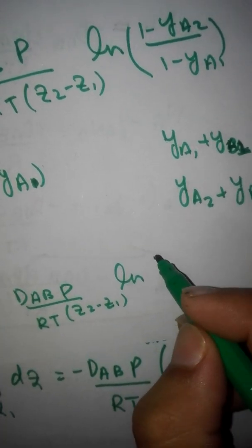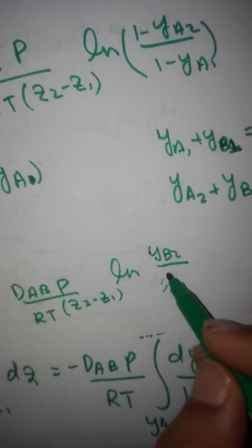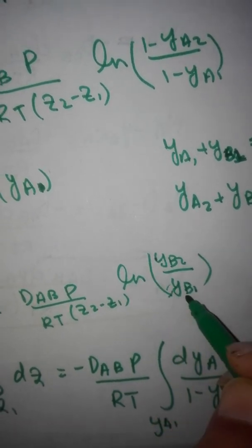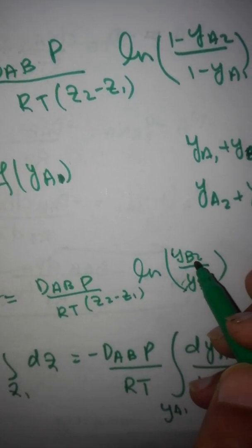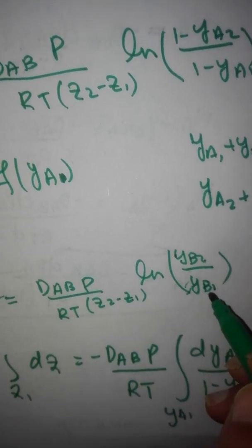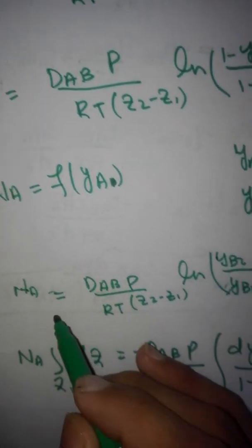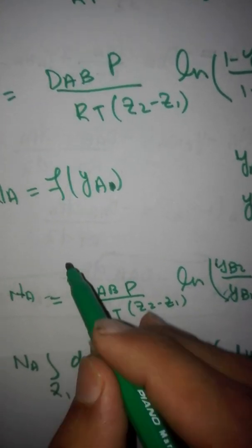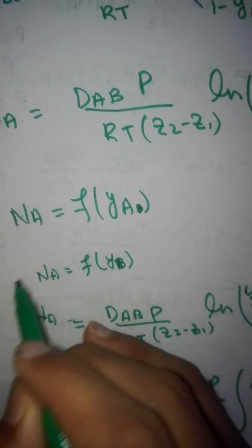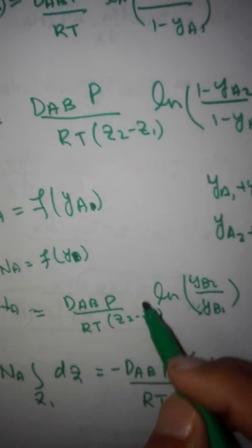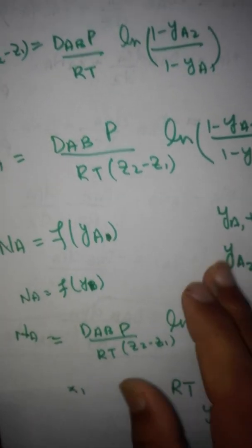The mole fraction of component B at position 1 (YB1) and at position 2 (YB2) can be used in the flux expression. The total molar flux of A is a function of both YA and YB — mole fractions of A and B. Its graph is not linear but rather a logarithmic function.